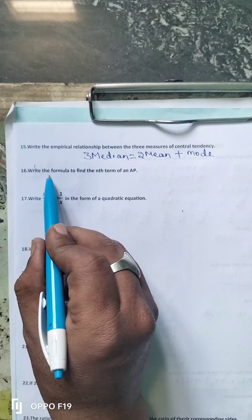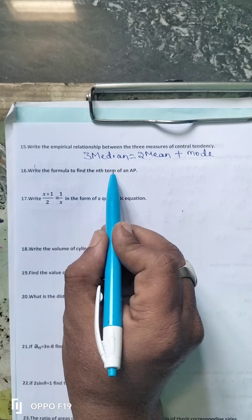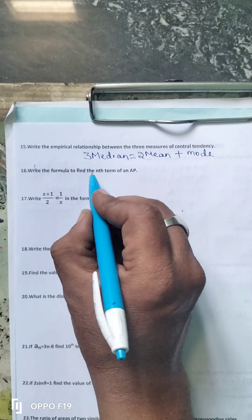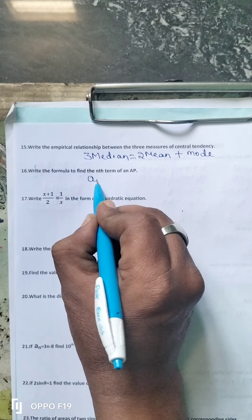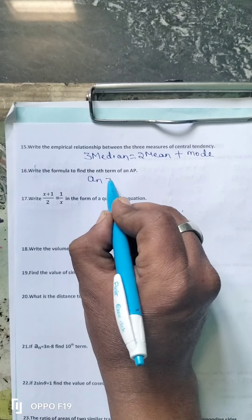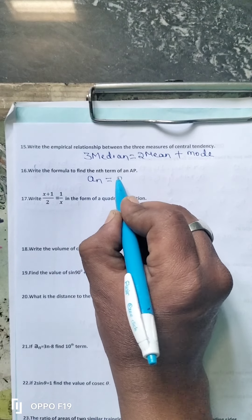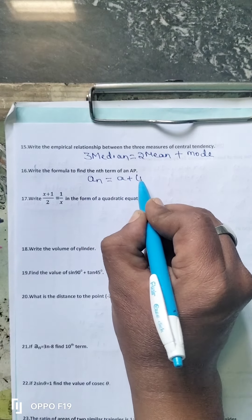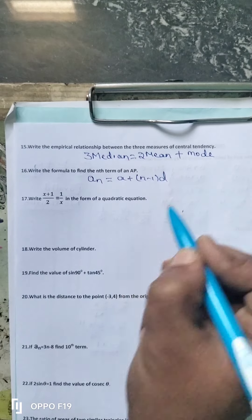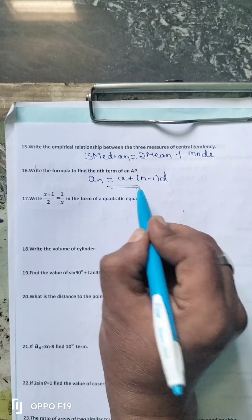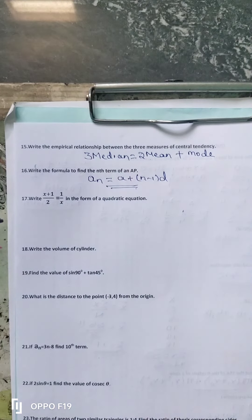The next question: Write the formula to find the nth term of an AP. The nth term of an AP is Aₙ, where Aₙ is equal to A plus N minus 1 into D.